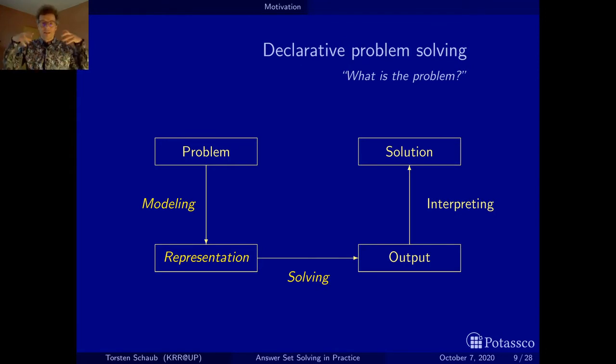That's why we actually refer to this as declarative problem solving, which again is a switch in the way we view things. Programming means a programmer exercises control, while here the idea is it's about problem solving and about the problem that you model and give it to a computer, and then the computer or the software, the solver, is in charge of solving it.